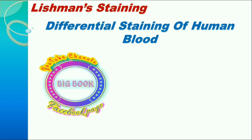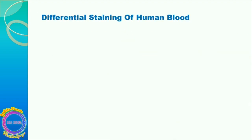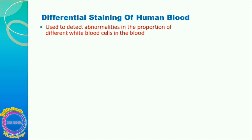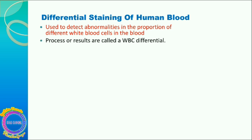Welcome to Big Book. Today we are going to discuss Leishman staining under the differential staining of human blood, where the process is called WBC differential. Differential staining of human blood is used to detect abnormalities in the proportion of different white blood cells. In colleges it is used to understand the technique, while in laboratories it is used to detect such abnormalities.